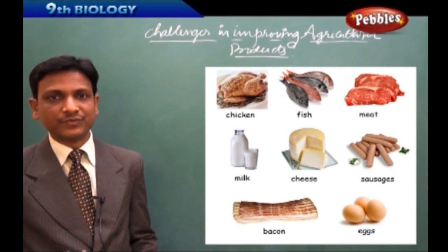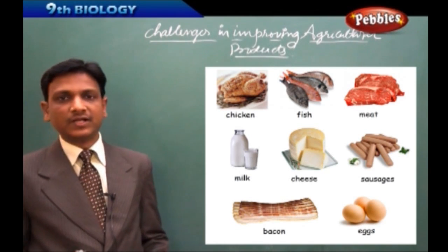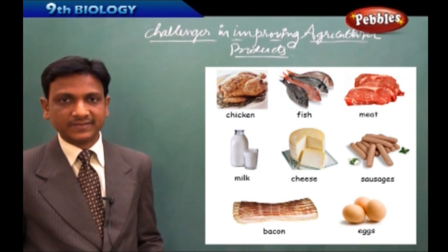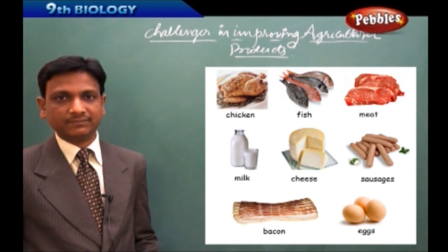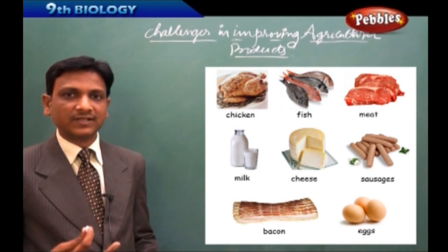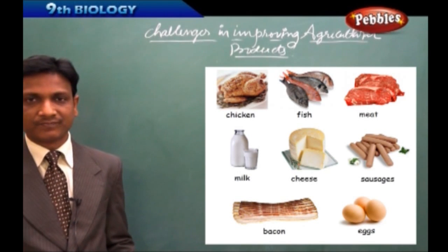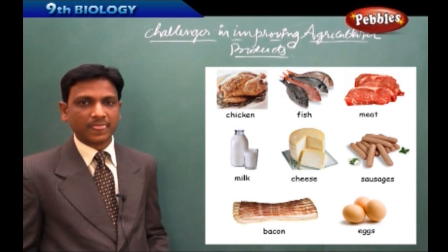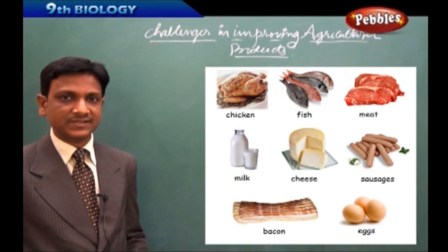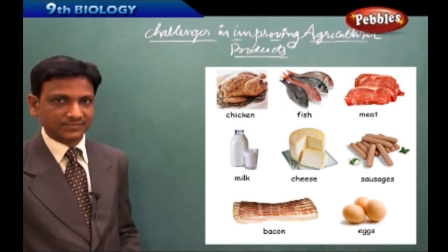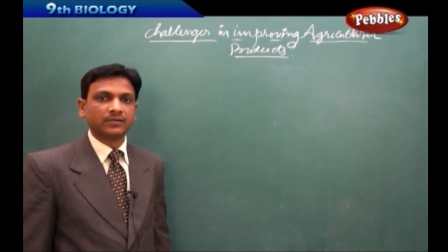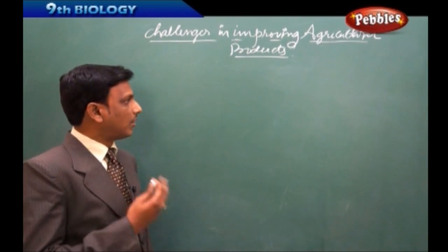We need fruits, we need vegetables, and certain people also need non-vegetarian food items like meat, fish, and eggs. These are the different items used to make our food. Every person needs a few of these items to make their living, to prepare their food.